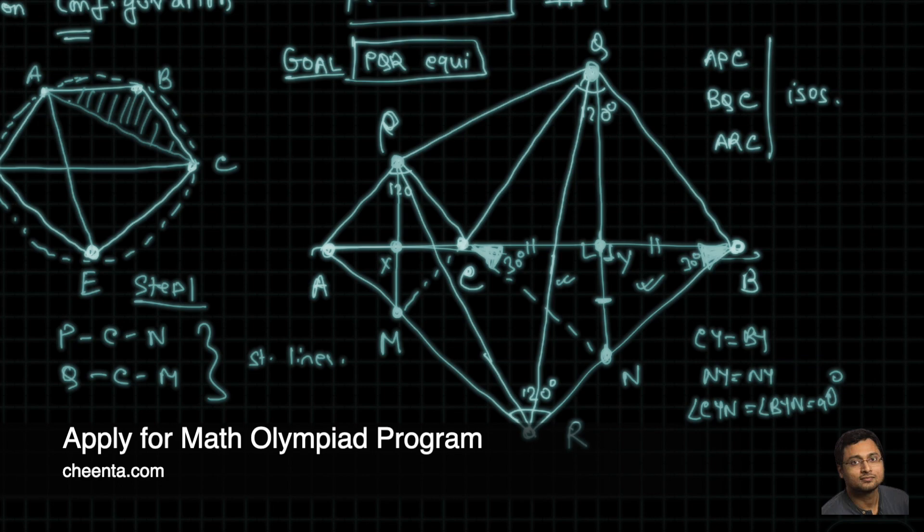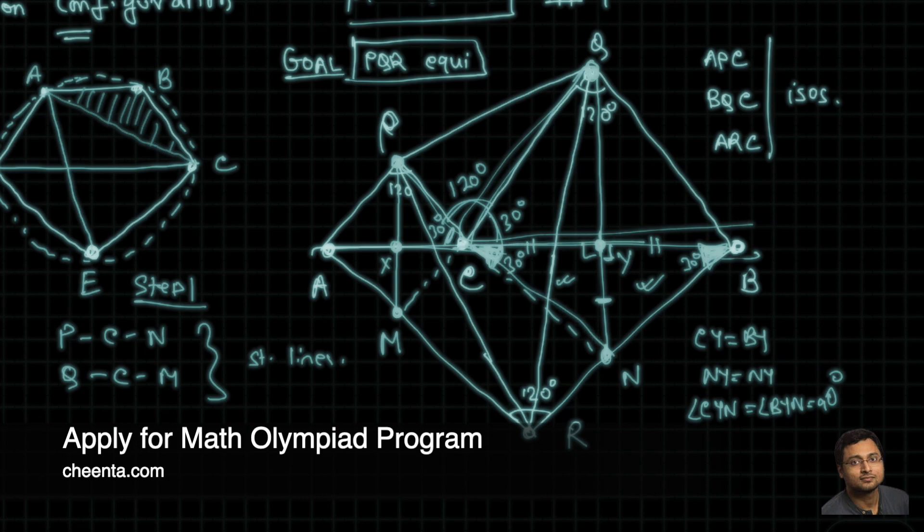Which basically means that PCN is 180 degree. Why? Because, well, this angle is 30. You can compute this angle to be 120 as well, because this angle is 30. So this PCQ is 120. QCB is 30. And we just proved that BCN is 30. So PCN is 180 degree. 120, 30, 30.